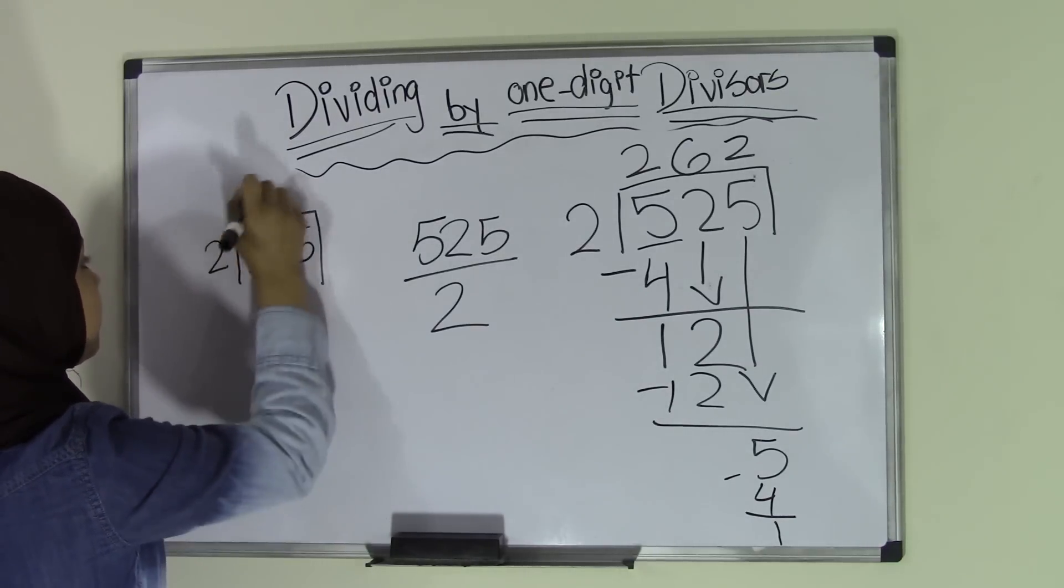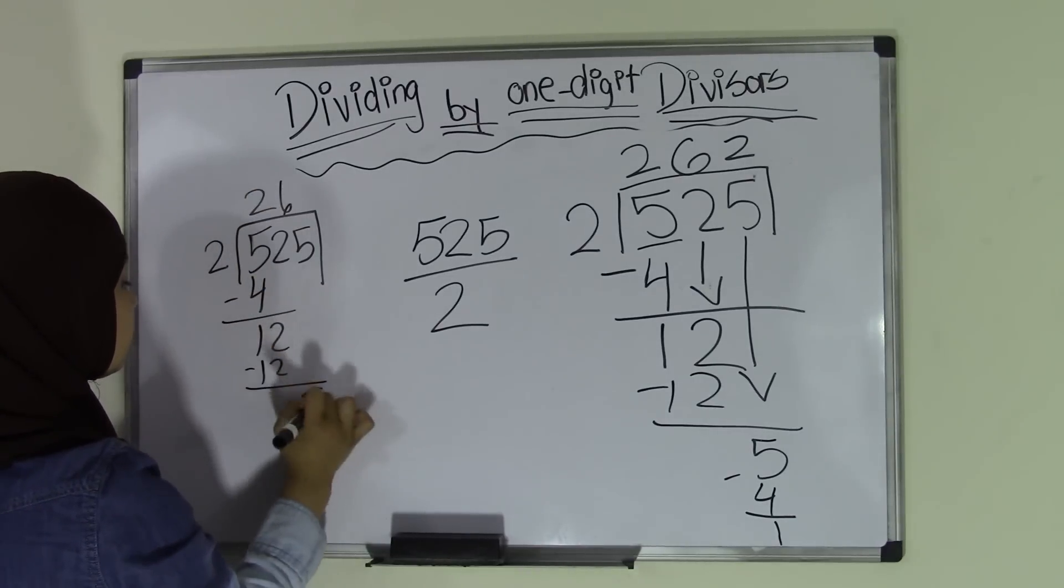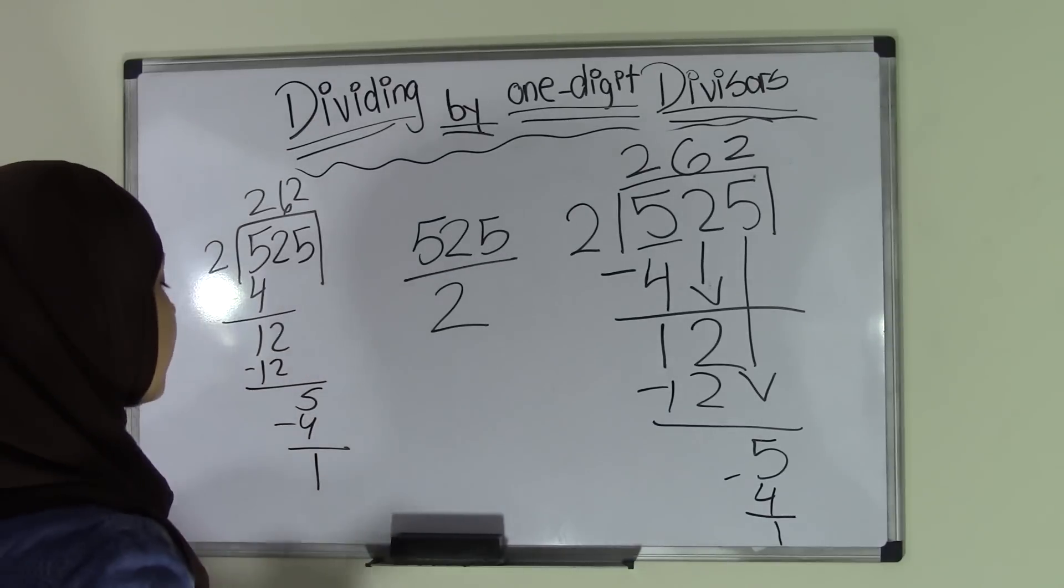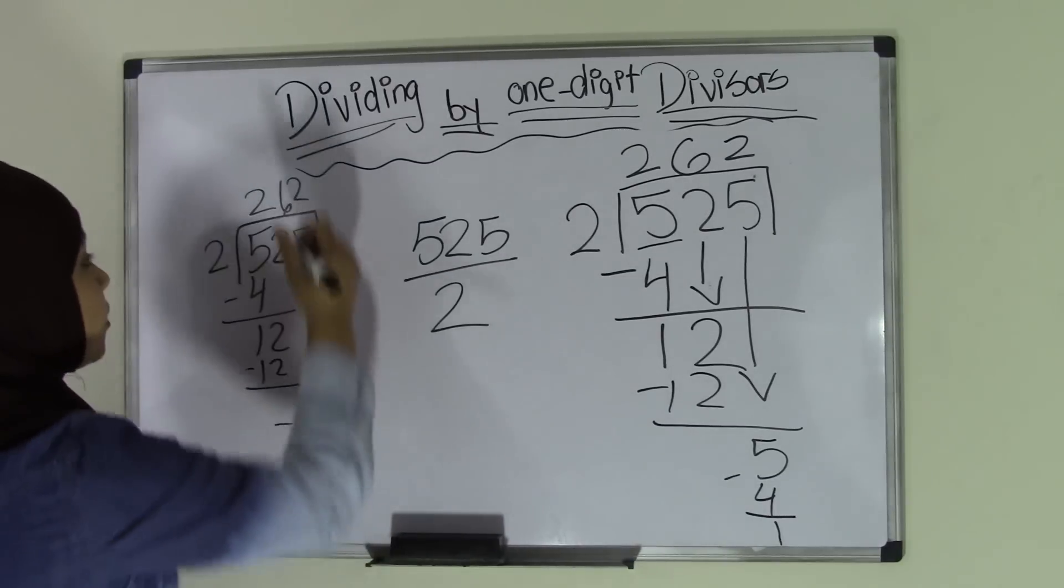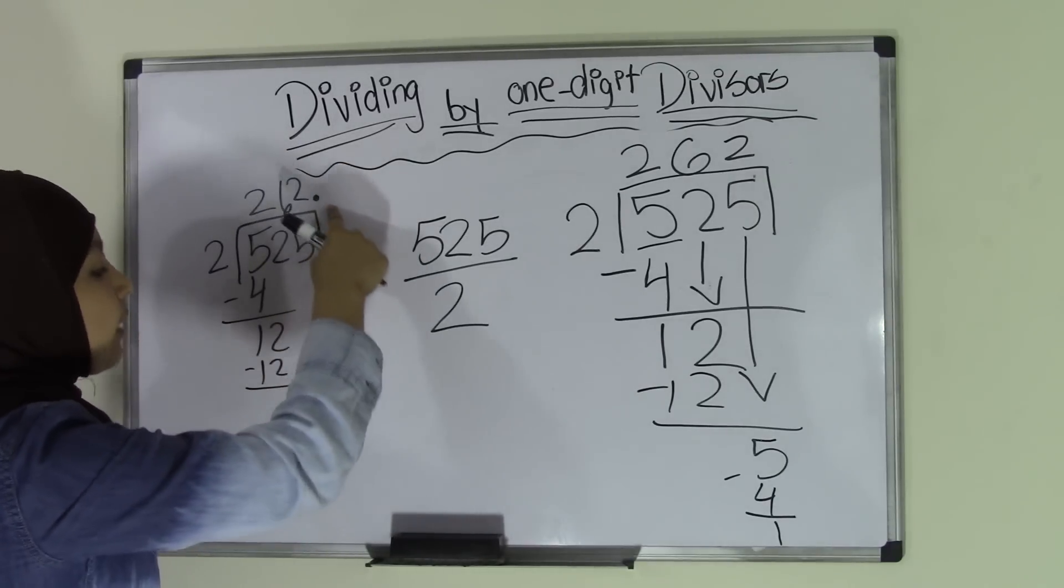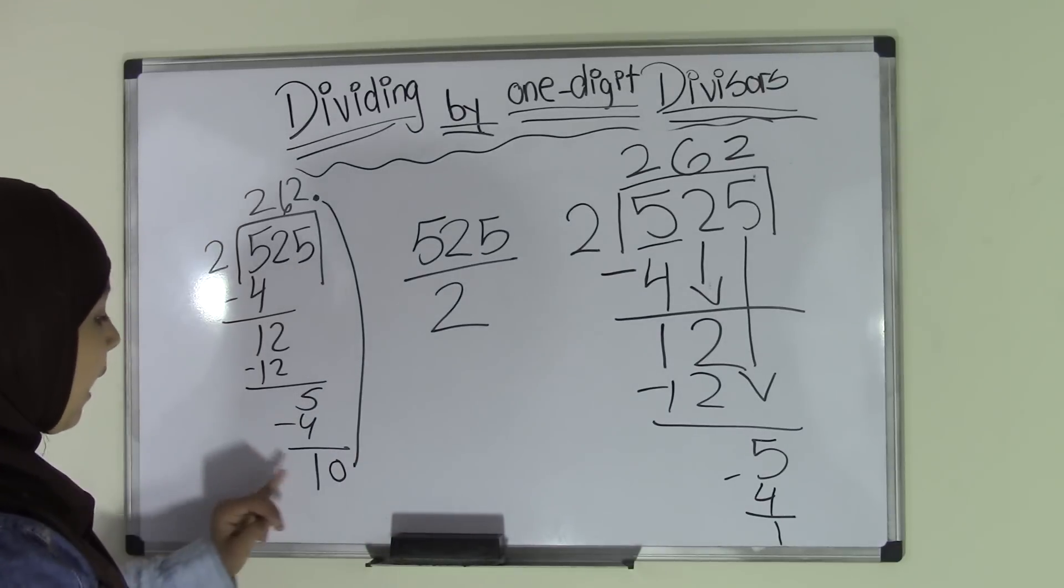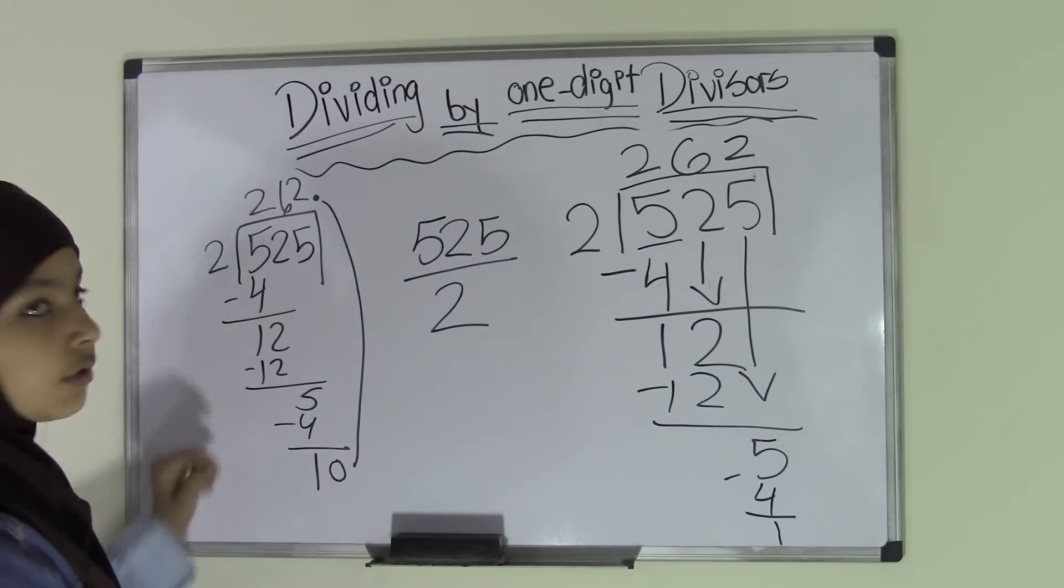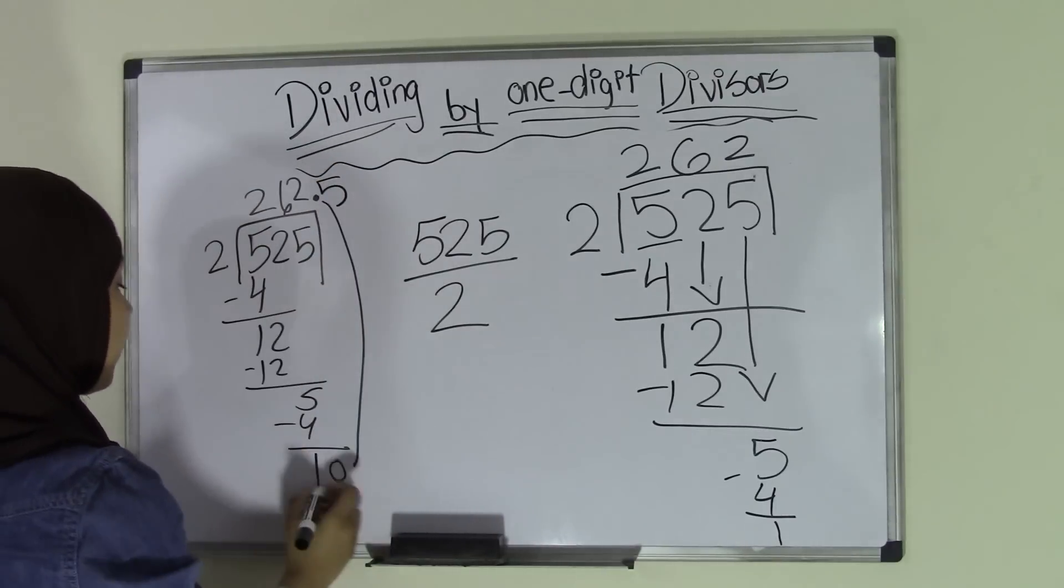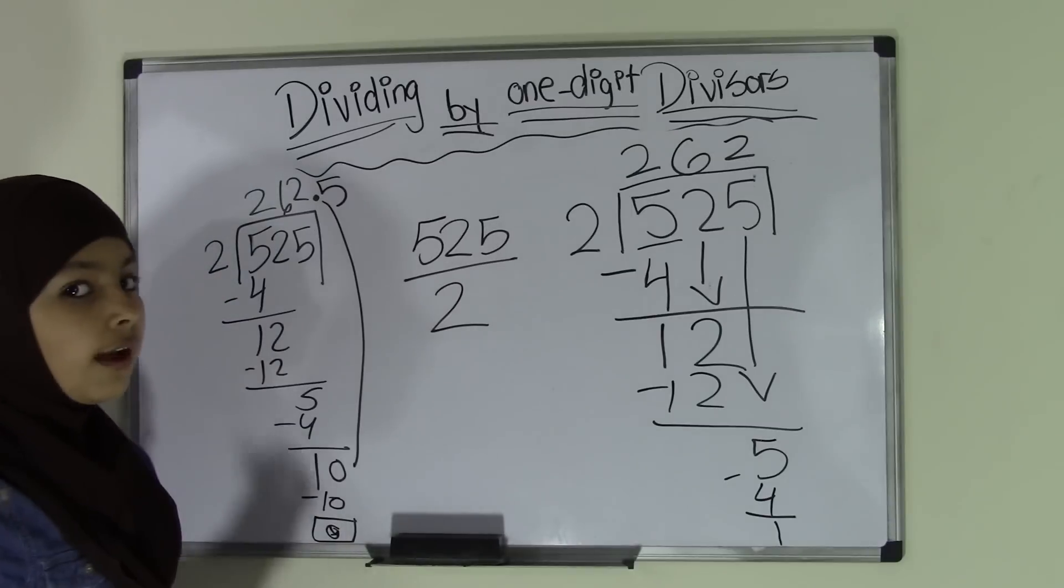So now we have 1 left. So we're going to change this into a decimal. First thing that you're going to do is you're going to add a decimal point up here in your quotient. And then this decimal point allows you to, over here, add a 0 here. So now we have 10 divided by 2. How many times does 2 go into 10? 5 times. Therefore, we're going to write 5 after a decimal point. And this is going to become a 10. And now we have a 0 as a remainder. That means we do not have a remainder.